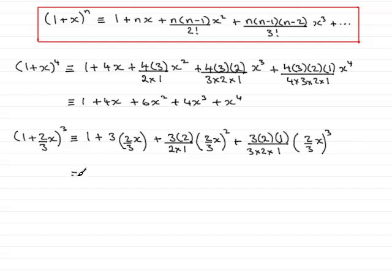All that's left to do now is just tidy this up. So we have 1, and then 3 times 2 thirds x is just going to be 2x. Then we have plus, and then if we work this term out, don't forget this becomes 4 over 9, 4 ninths x squared. 4 ninths x squared times the 3, because the 2's cancel. So 4 ninths x squared times the 3 becomes 4 thirds x squared. So we just pop that in there, 4 thirds x squared.